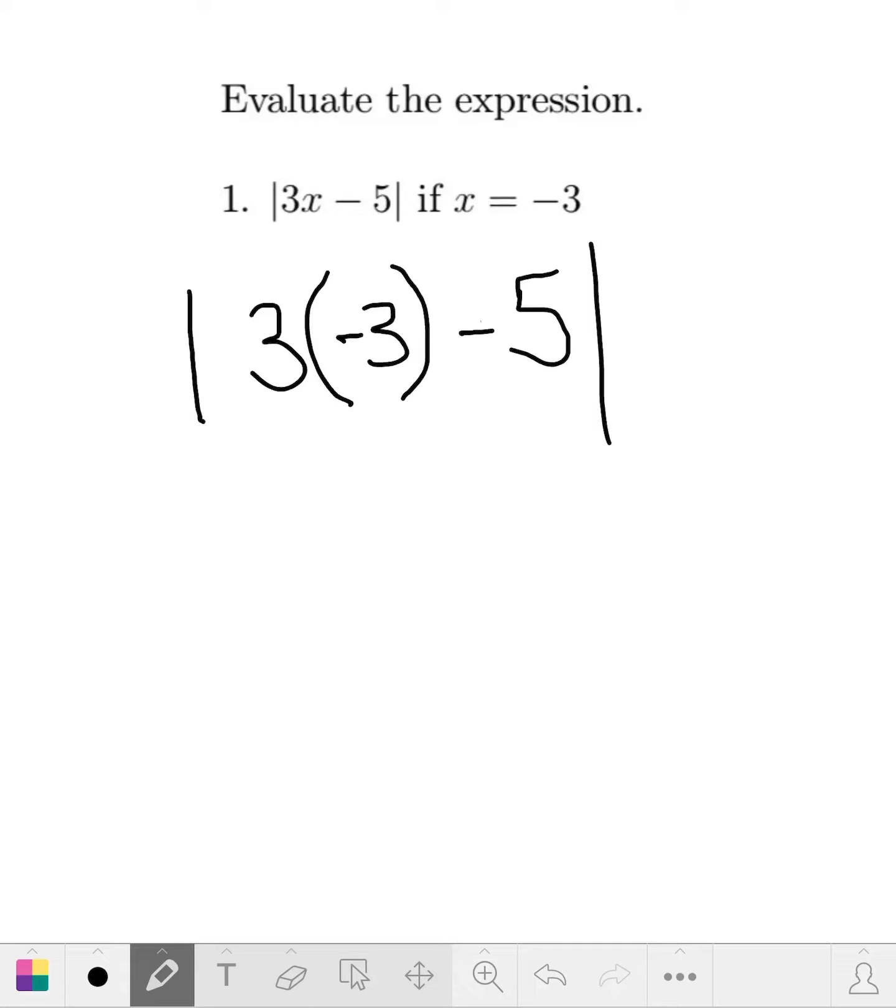Parentheses and multiplication come first, so we have three times negative three, which is negative nine, with the absolute value sign again, minus five, absolute value sign.